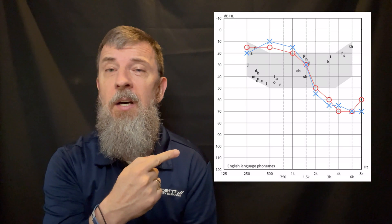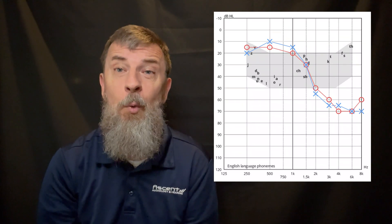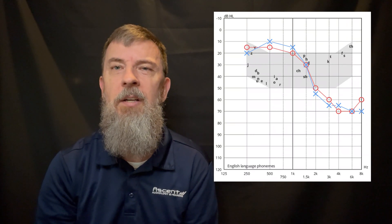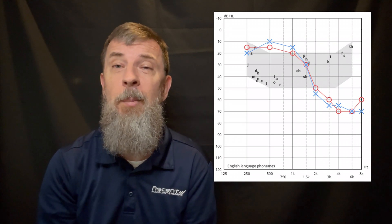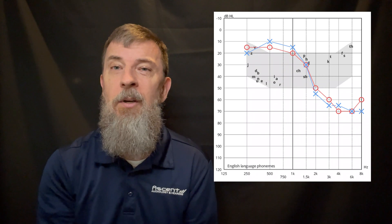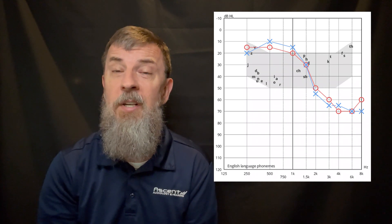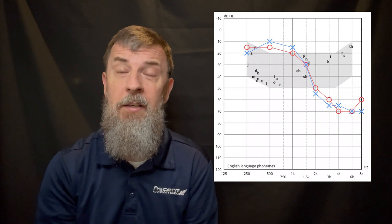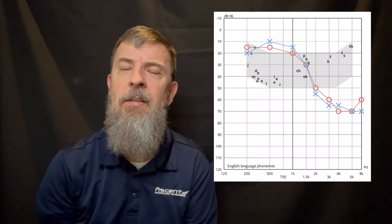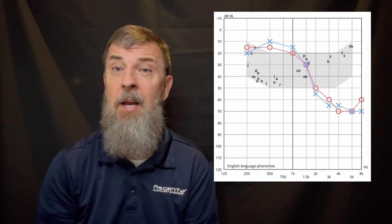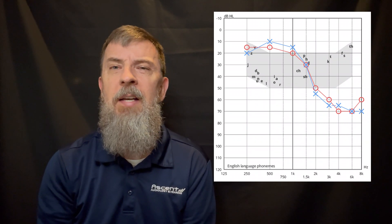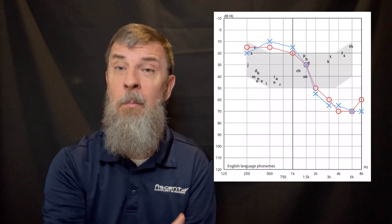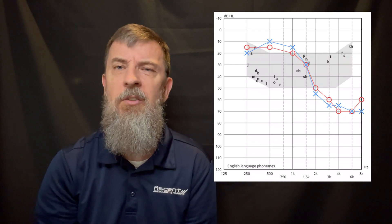This is an audiogram — not an actual person's audiogram, but one I created that is representative of a very common hearing loss that we see regularly in the office. The blue X's and the red O's represent where your hearing is. The X's are your left ear, the O's are your right ear. As we go across the graph from left to right, it's just like going across a piano — from low pitches to high pitches. And as we go from top to bottom, the farther down your marks are, the more hearing loss there is.